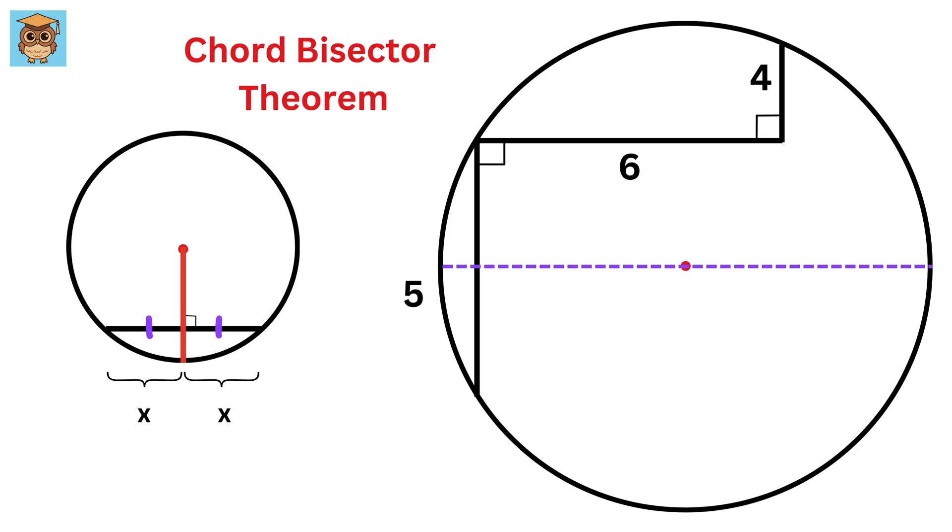Now draw this diameter, and then draw this rectangle whose side lengths are 5 and 6 like this. Now draw this line which is perpendicular to this side of the rectangle. What do you think its length will be?